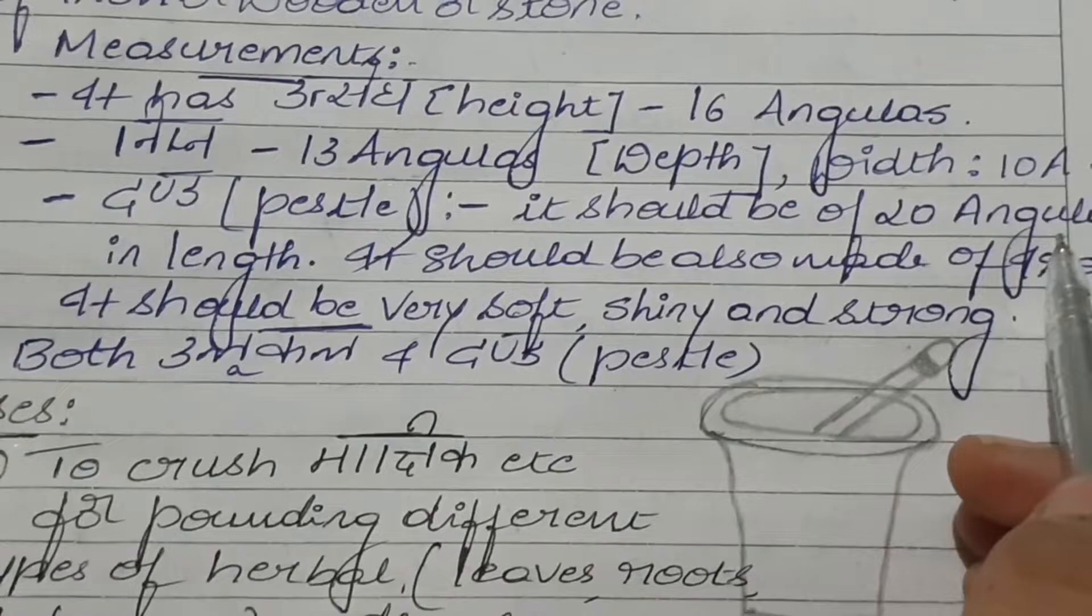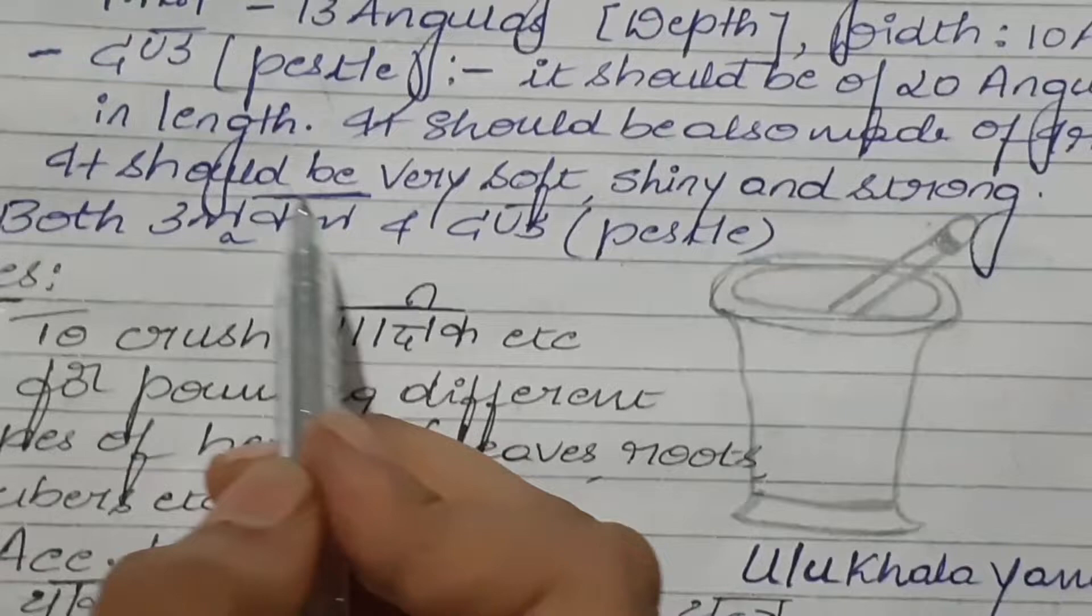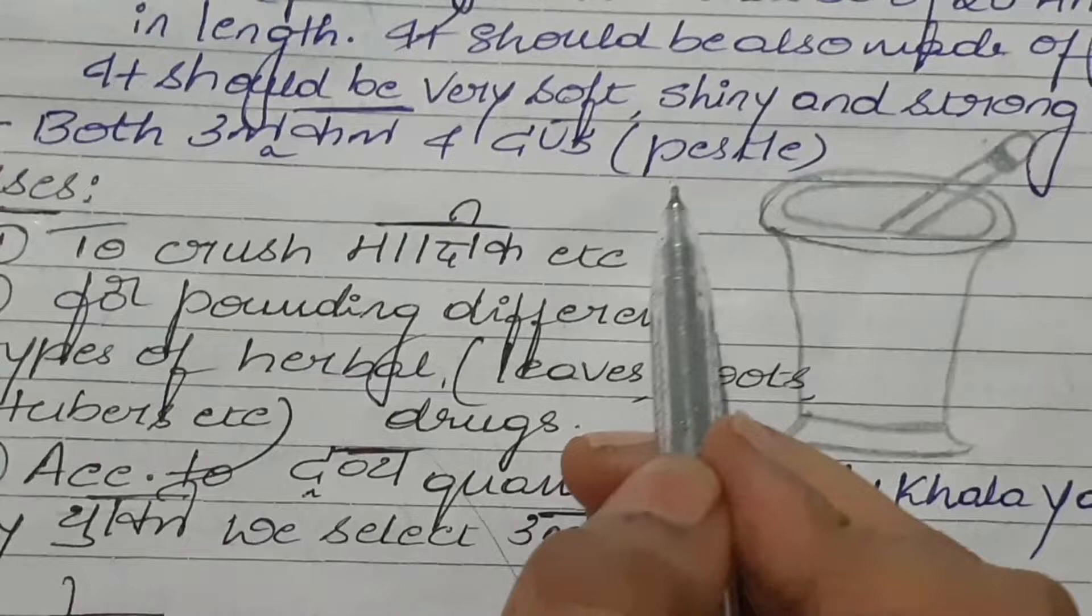The pestle of Ulukala Yantra should be of 20 angulas in length and should also be made up of iron, wooden, or stone. It should be very soft, shiny, and strong.